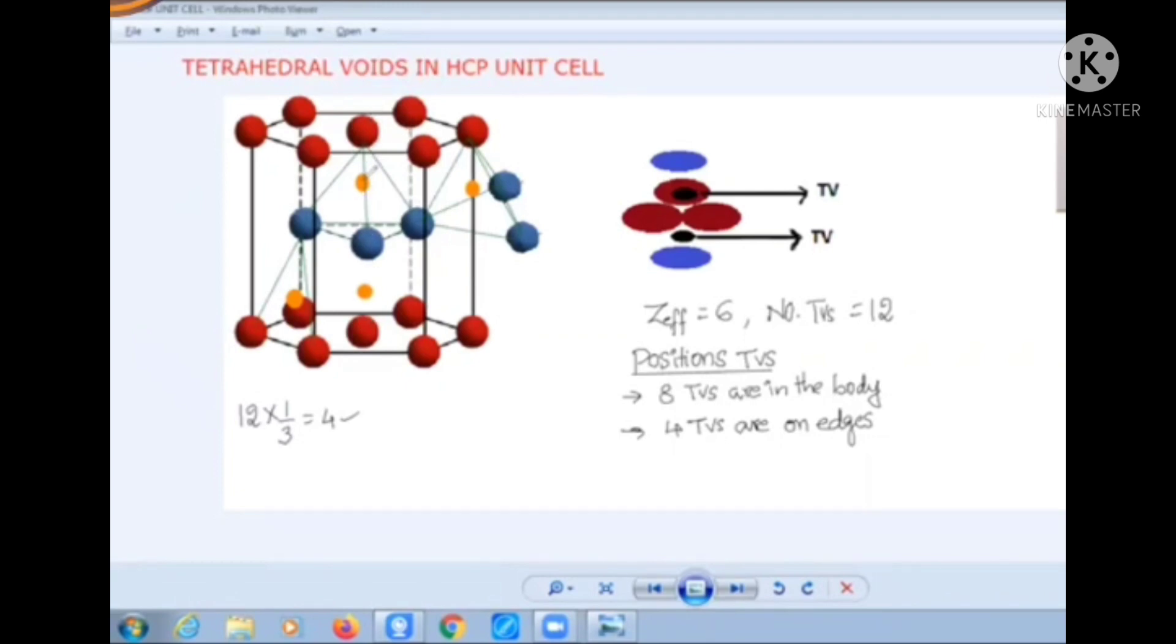So this is one position. Similarly, we will get one more here, one more here. So there are two like this and the other position. If a line joining these atoms, this atom and this atom is taken within the body, there are two tetrahedral voids found on it.